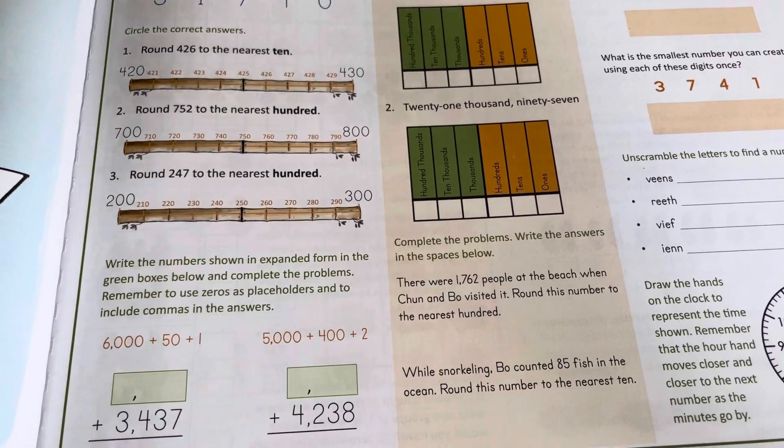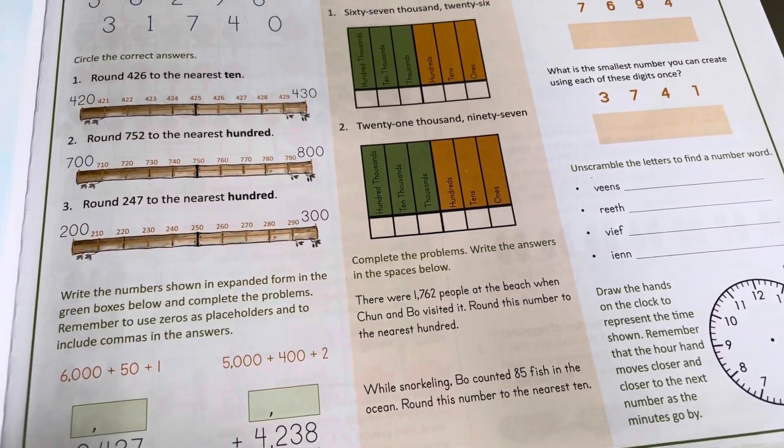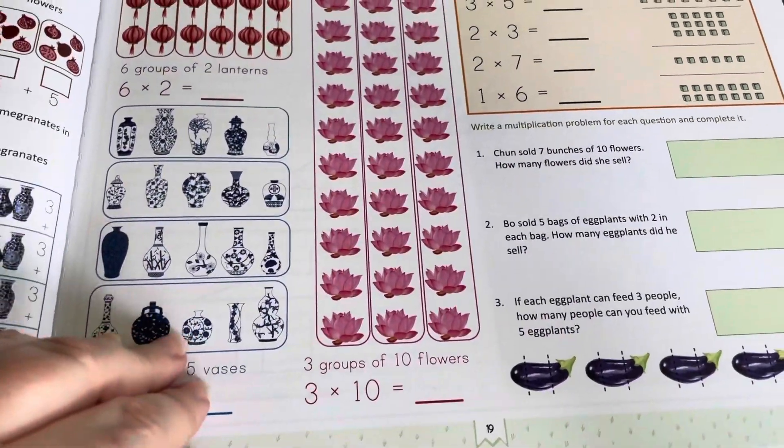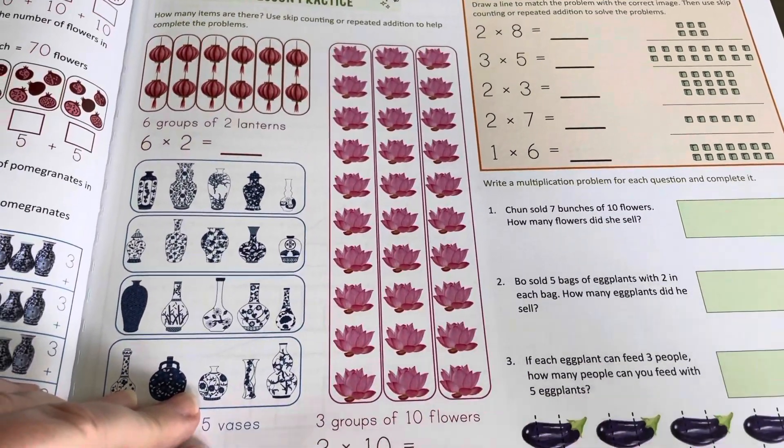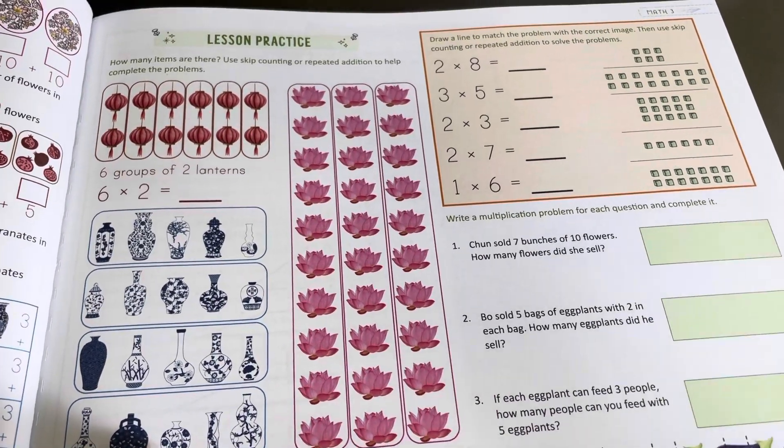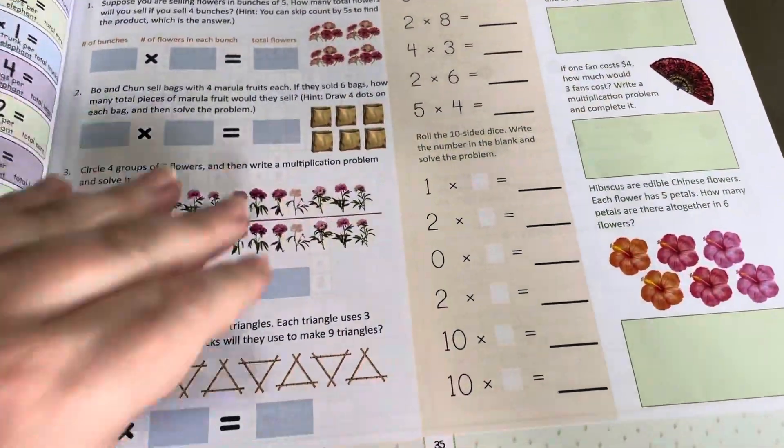But in our review, we have the rounding, which were the first couple lessons, the place value which was the first lesson, and some puzzles. We really enjoyed the logic stuff last year. So he's happy we get to do tangrams this year.